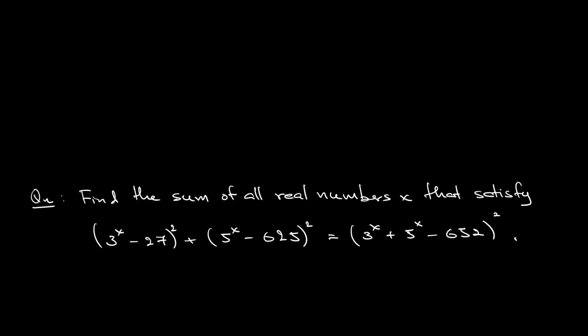(3^x - 27)² + (5^x - 625)² = (3^x + 5^x - 652)²